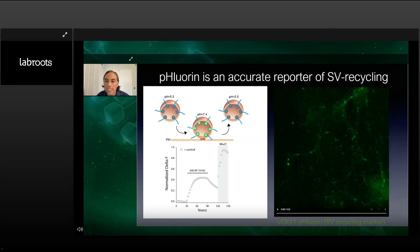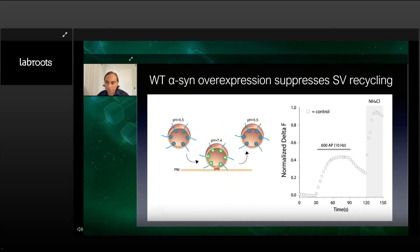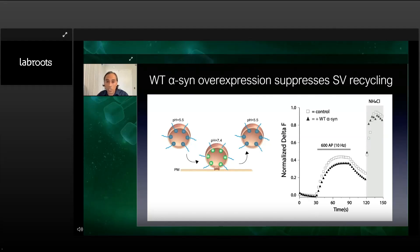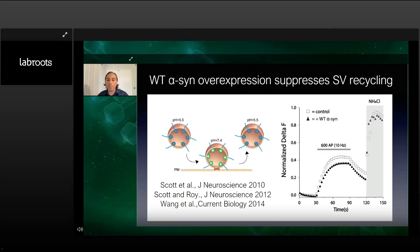In this assay we can measure synaptic vesicle recycling, and since we are stimulating neurons, this is an activity-dependent assay. In the experiment, control neurons infected with lentiviruses show a baseline recycling. When we overexpress alpha-synuclein, we observe a suppression of this recycling, meaning synuclein is working as a negative regulator of neurotransmission. This data is consistent with our previous publications. I'm really interested now in what is happening to phosphorylated alpha-synuclein at serine 129.